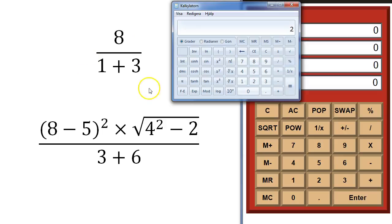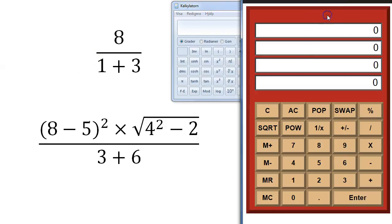And to calculate this thing in an RPN calculator, here we have something called Alcula. I just found it on the internet, but there are a lot of RPN calculators, physical as well. So to calculate this thing, you would simply start by entering 8. And as you can see, it ends up here in something called the stack.